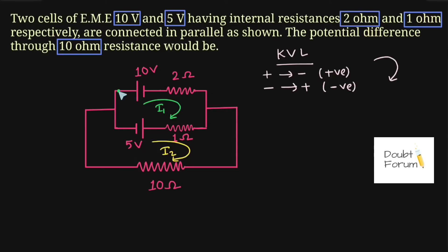When we start from this point, we first meet the positive plate of the 10 volt battery, then the negative one. So we are moving from higher potential towards lower potential — the polarity of this 10 volt is positive, so this is +10 volt. Then moving to the next point, current enters here and leaves here. Current flows from higher to lower potential, so the voltage drop across the 2 ohm resistor is positive and equals 2 times i1.